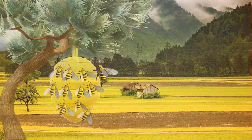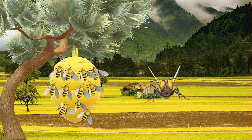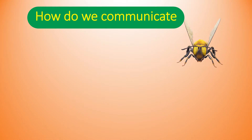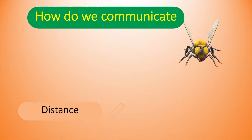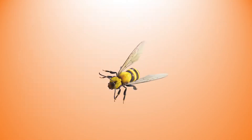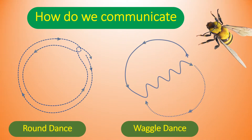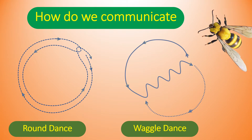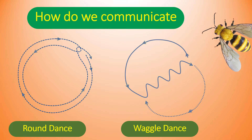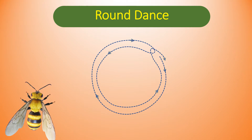Dance of the honeybee. Do you want to know how we communicate with each other when we find very good quality of nectar? Let me tell you about how we communicate about the distance, direction, and quality of nectar. Welcome to my channel, Smart Science. Round dance and tail waggling dance are two types of dance which we perform for communication with each other.